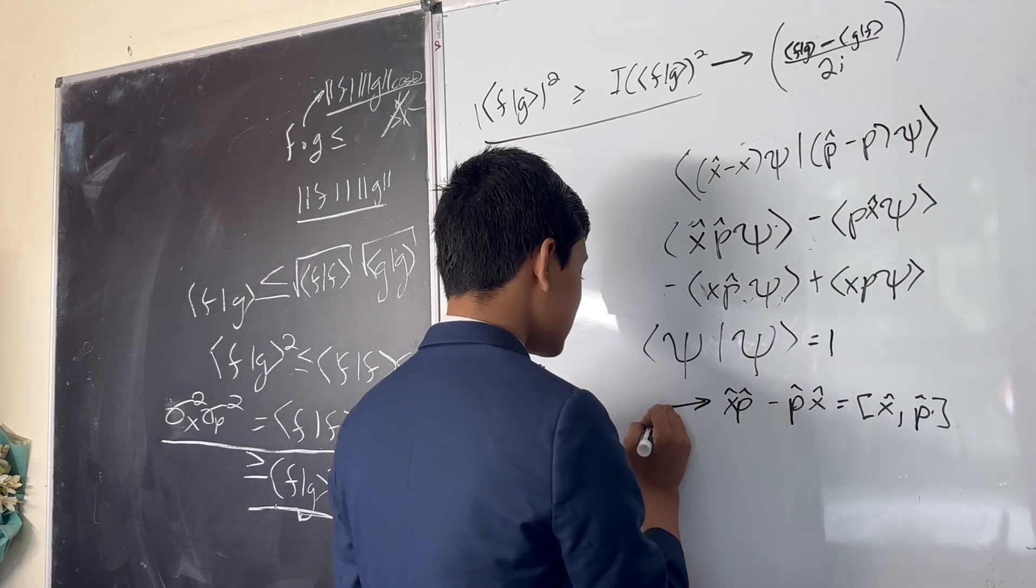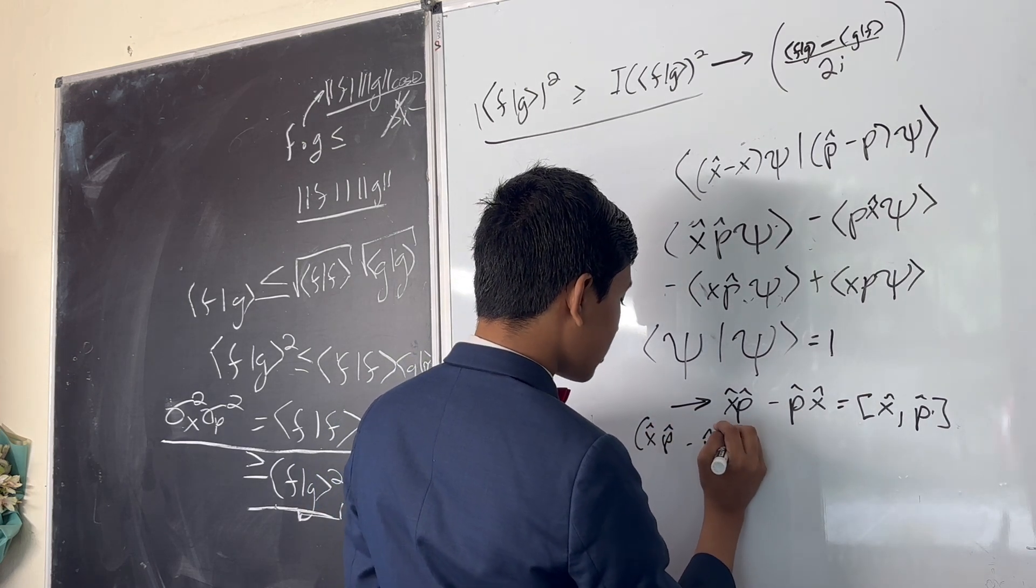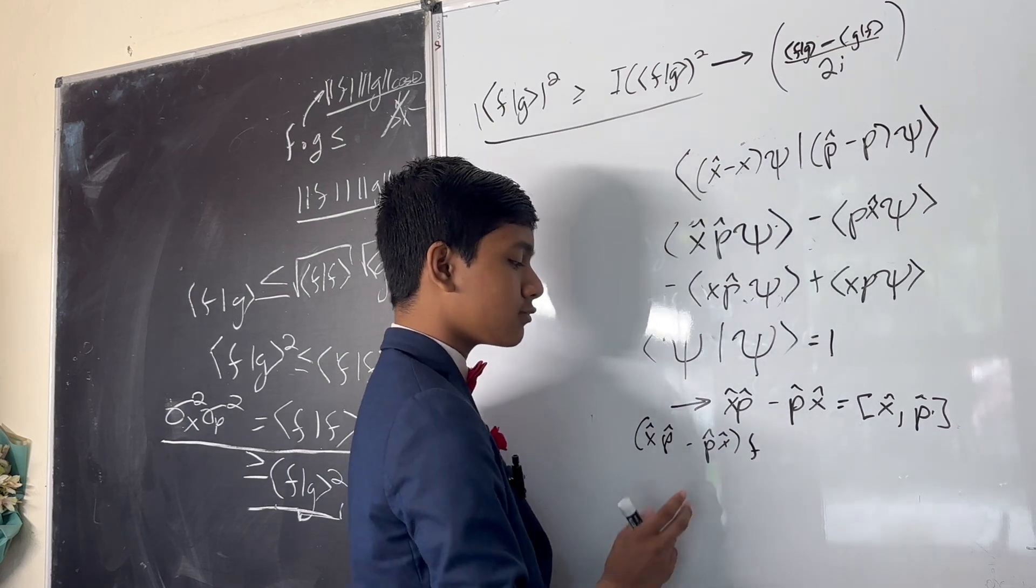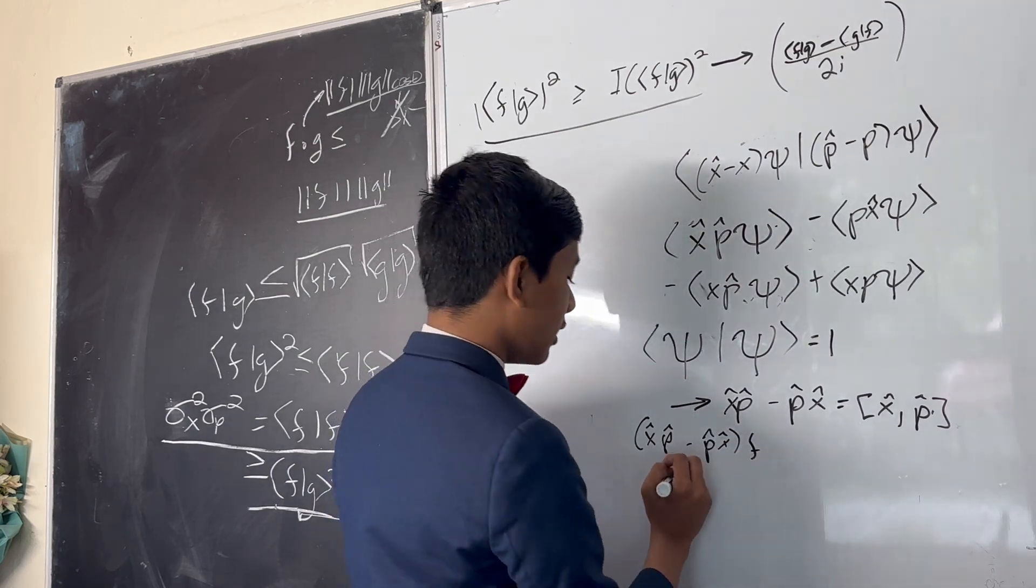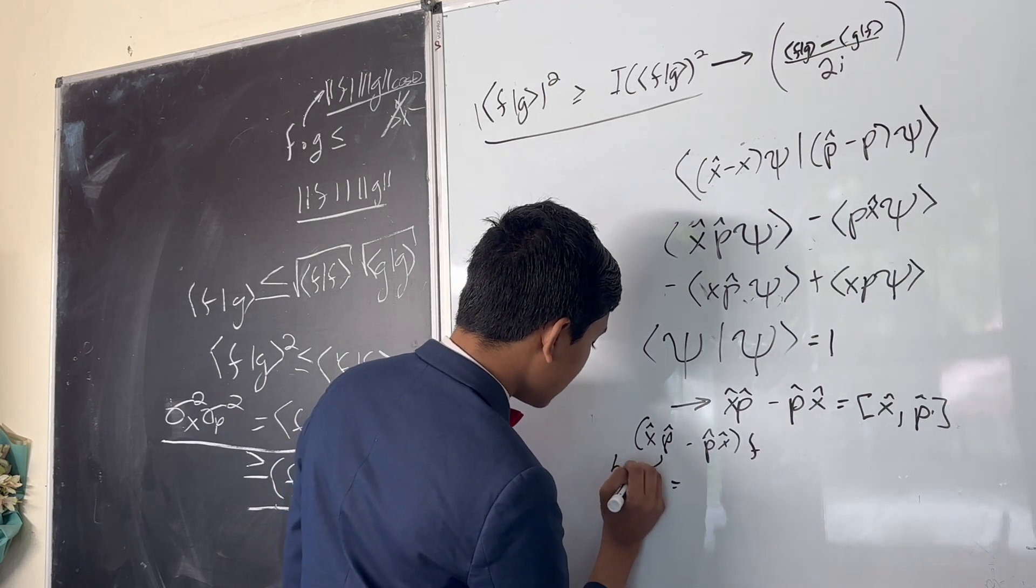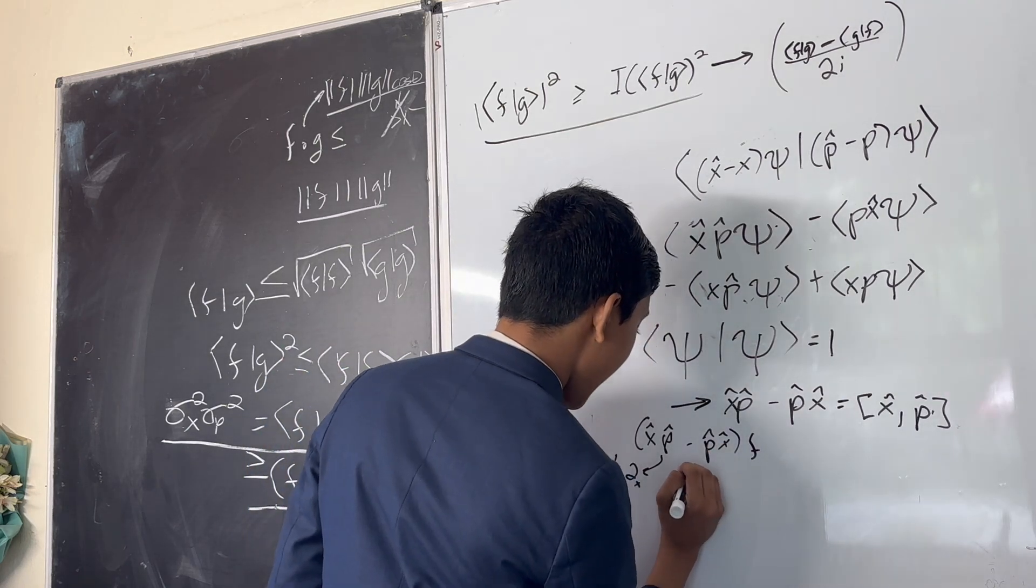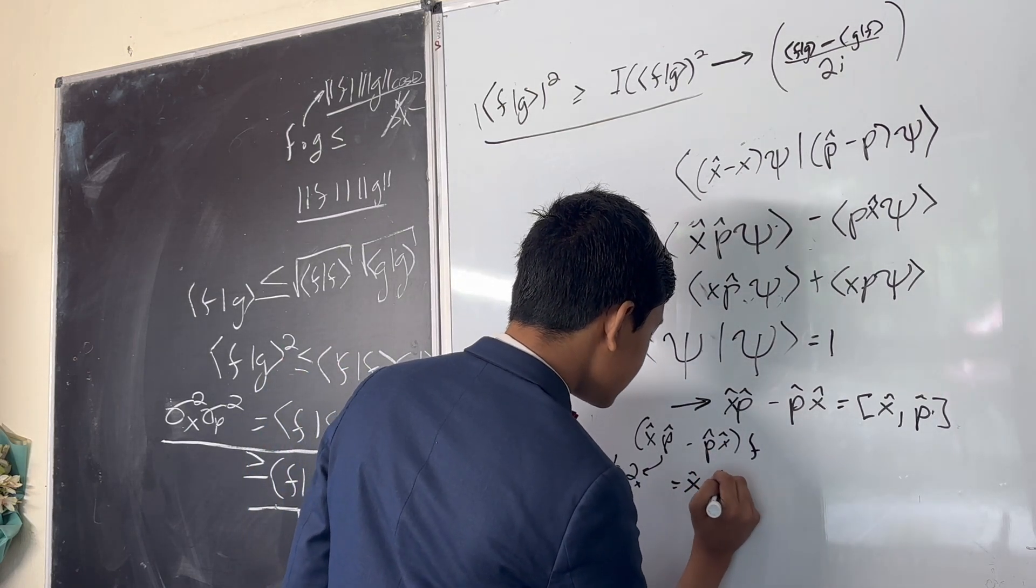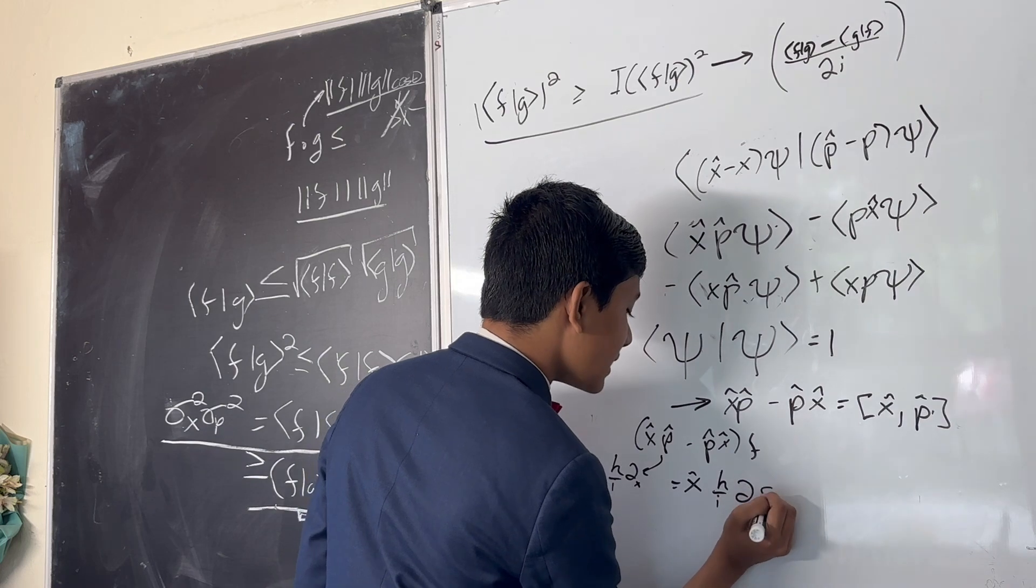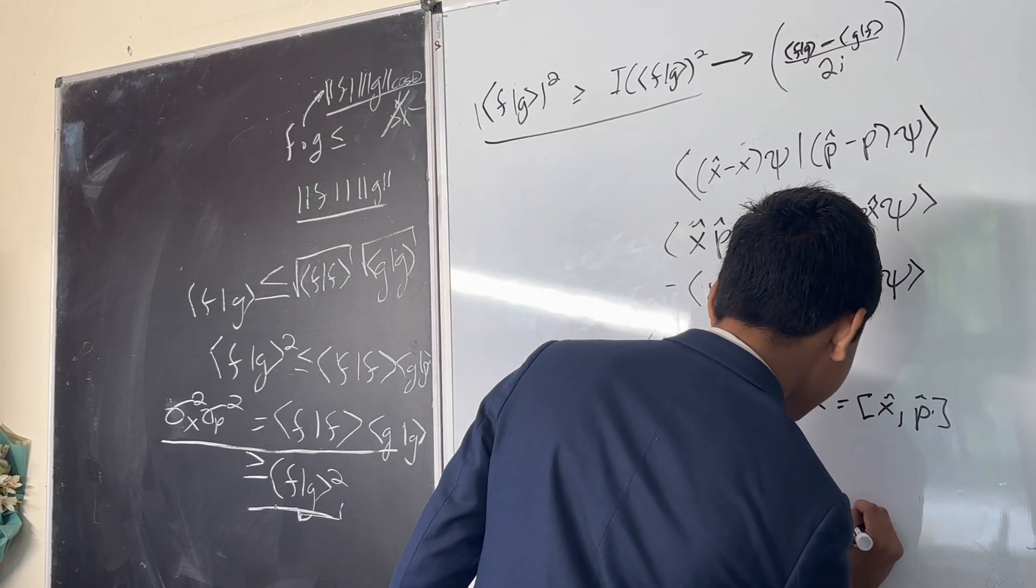Now to figure out what this is, we're going to test it out on some function f and see what happens when we apply it to f. Well, we get, since this is h over i partial x, this is going to give us x hat h over i partial x f minus h over i partial x of xf.